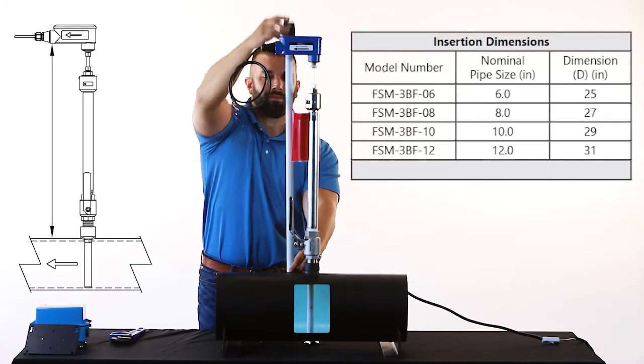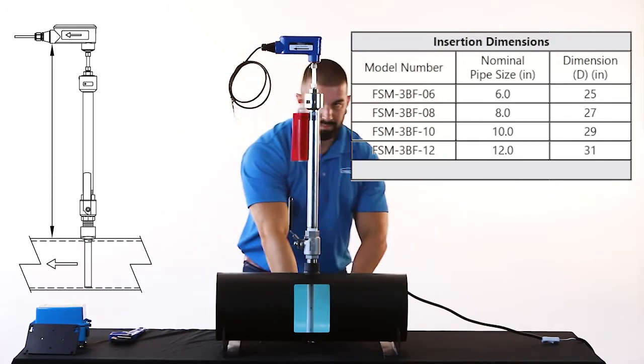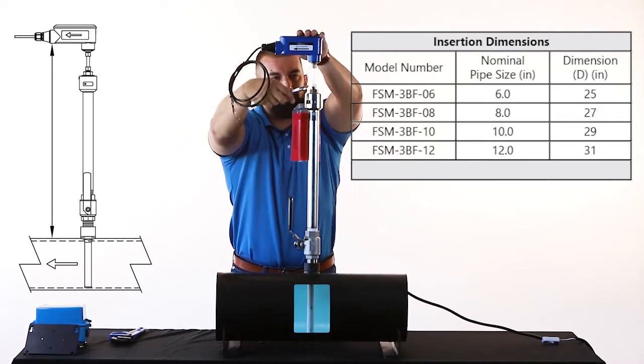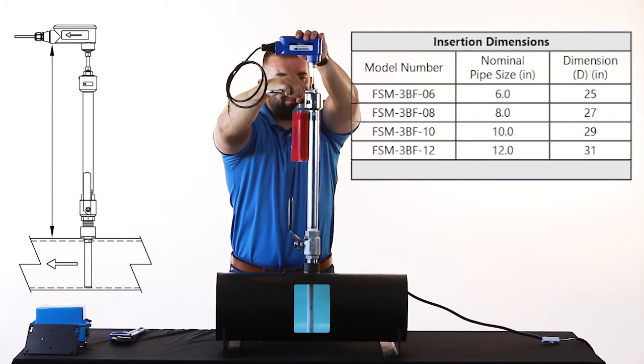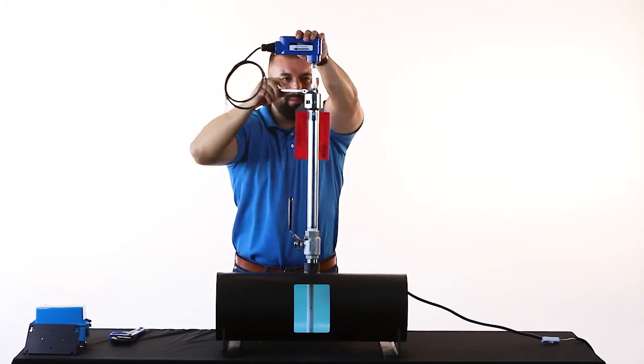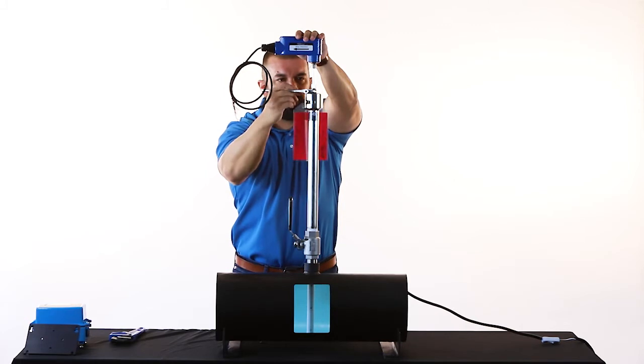Measure the distance from the top of the pipe without insulation to the bottom of the flow sensor enclosure. This distance should match the dimension needed for your specific size meter based on the table here and in your manual, confirming that the flow sensor has been fully inserted.